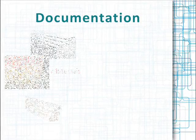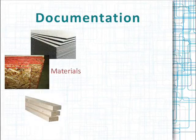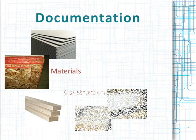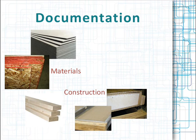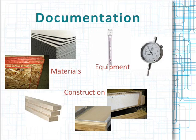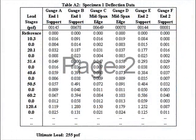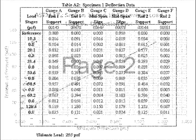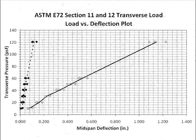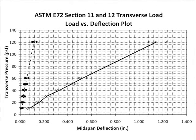Aside from reporting details on the materials and construction of the specimens tested and the equipment used, the report must include the maximum load achieved and the support span for each specimen, and the test results in graphical form plotting the incremental loads versus the bending of the specimen at each of those loads and the residual deflection after release of that load.